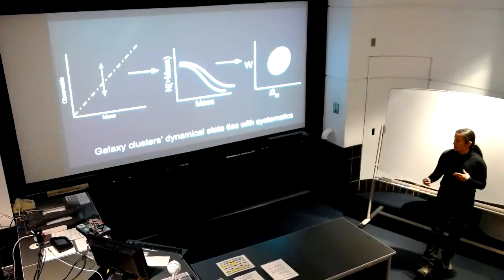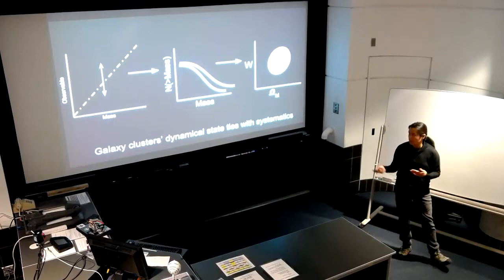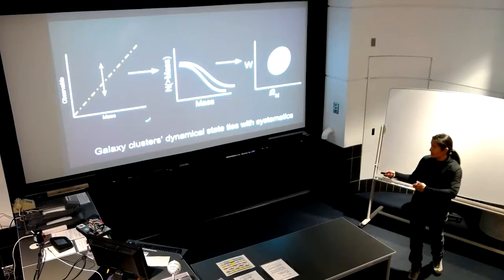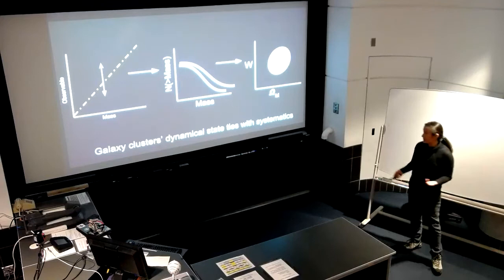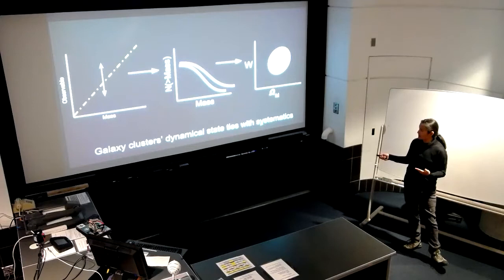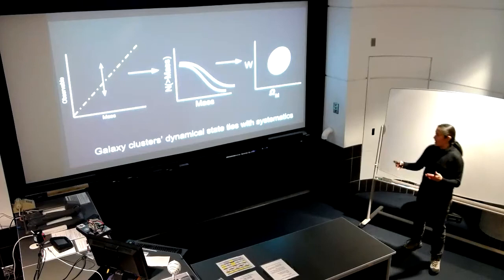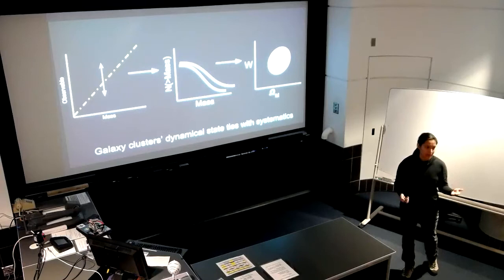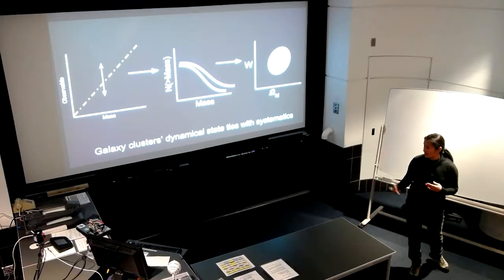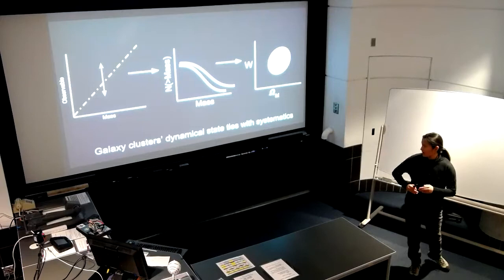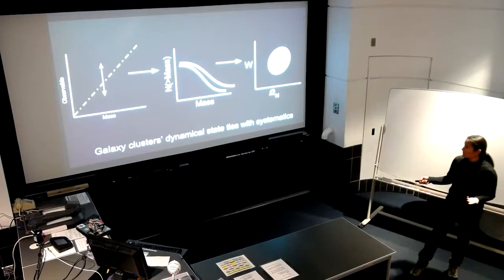Just to recap, galaxy clusters' dynamical state ties in with systematics to any one of these observables. What we want to get at is an observable mass relation. From that, you construct a galaxy cluster mass function and extract some cosmology out of that in terms of parameter constraints. So if we're asking how galaxy cluster dynamical state ties in with systematics, well okay, that means we have to understand how a galaxy cluster's dynamical state arrives at the state that it's in, and how that then translates to what you're observing.